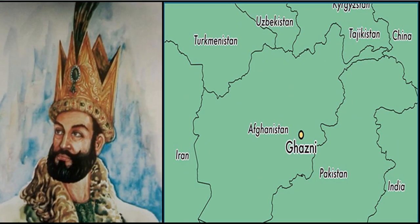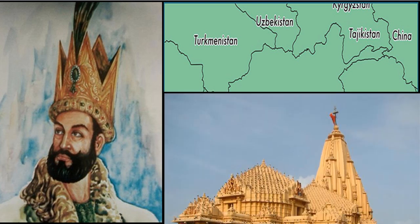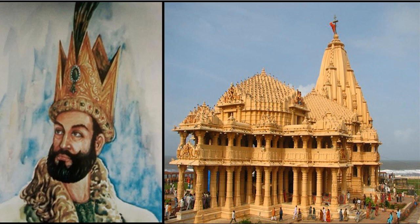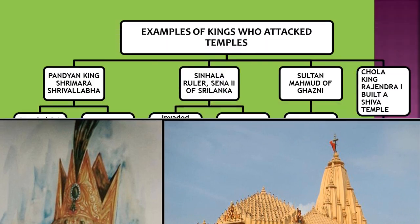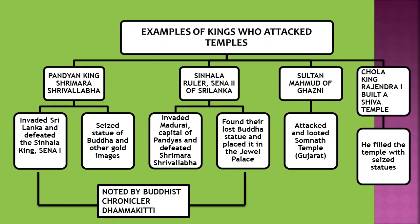The next example is of Sultan Mahmud of Ghazni. He came from Ghazni, which is in Afghanistan, and came to India where he looted and attacked many temples. One very important temple was the Somnath Temple in Gujarat that he looted. Another example is of Chola king Rajendra I, who built a Shiva temple and filled it with seized statues.